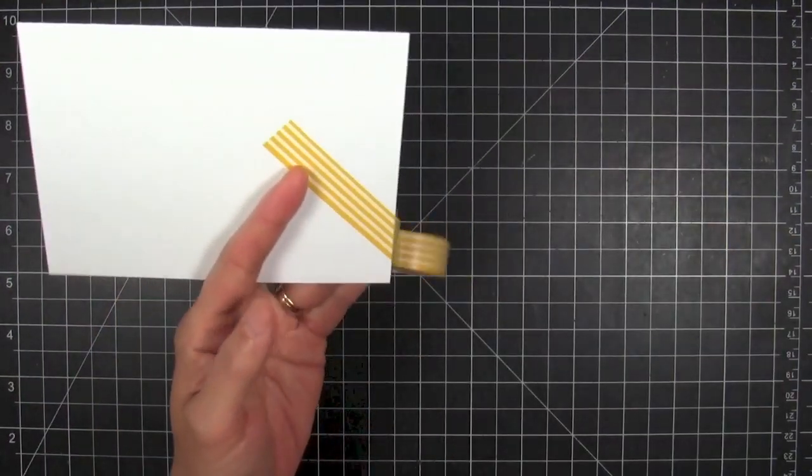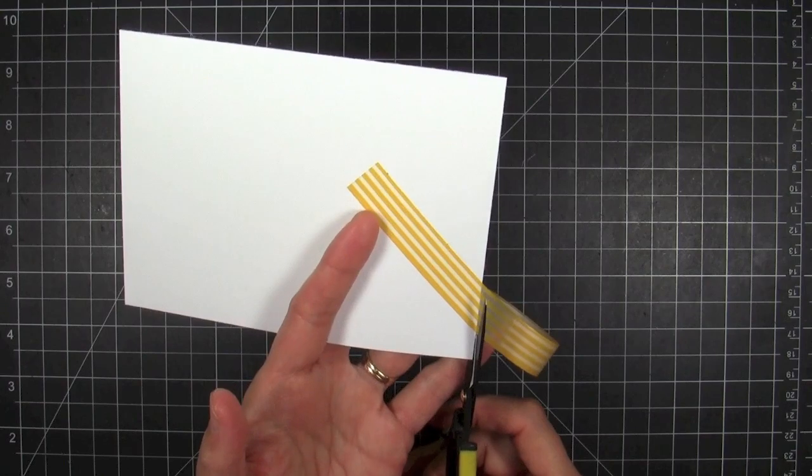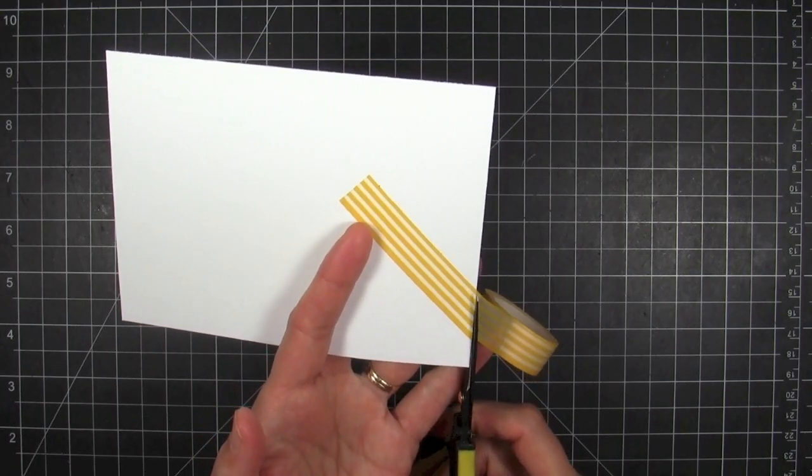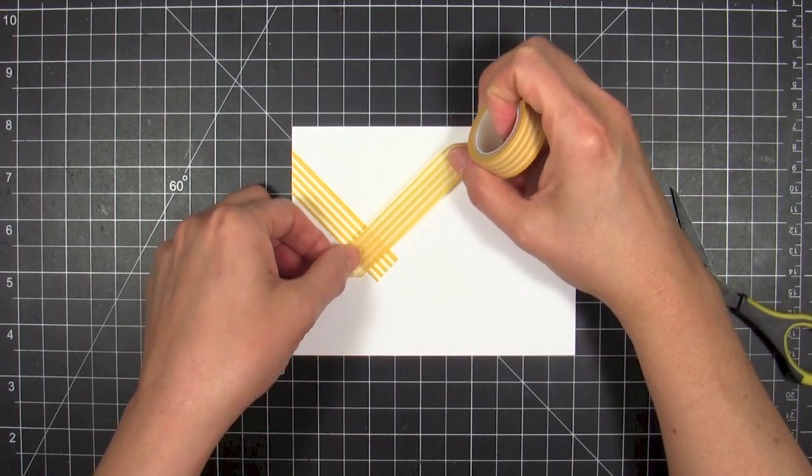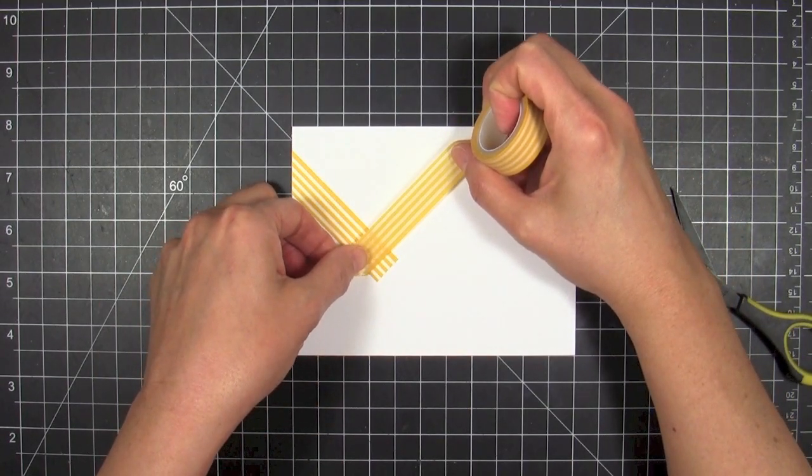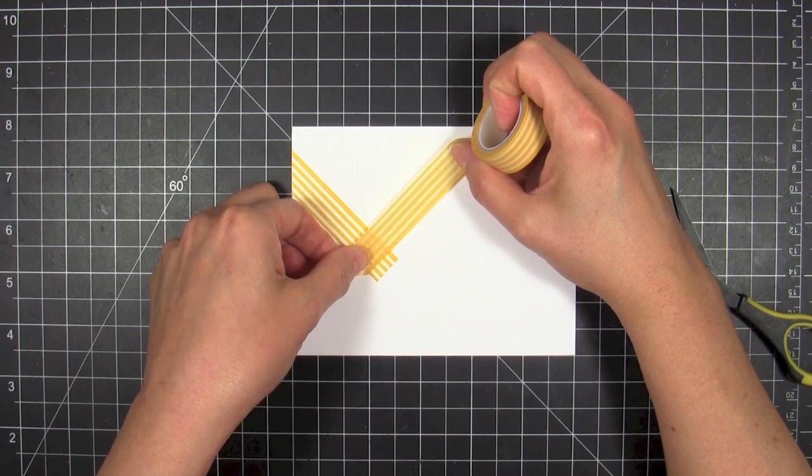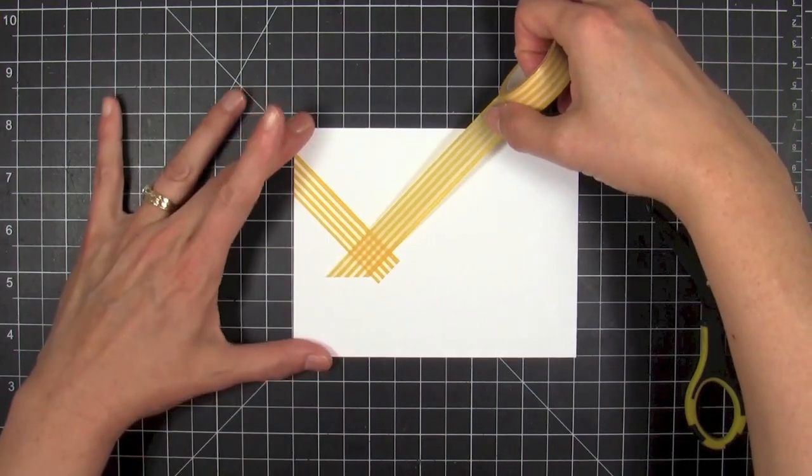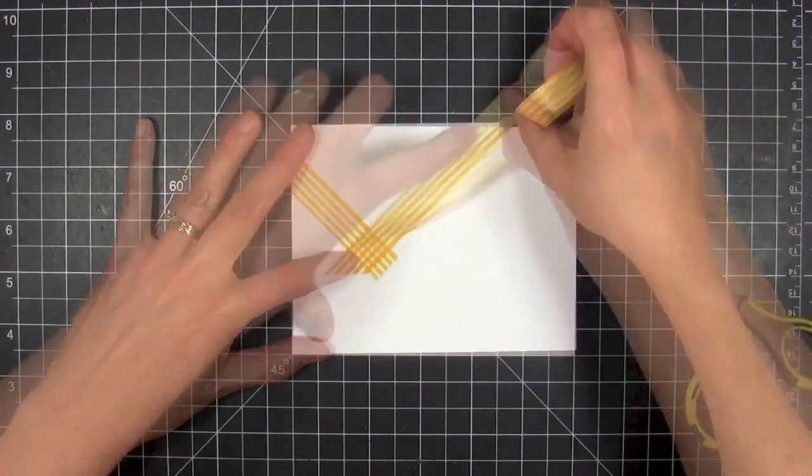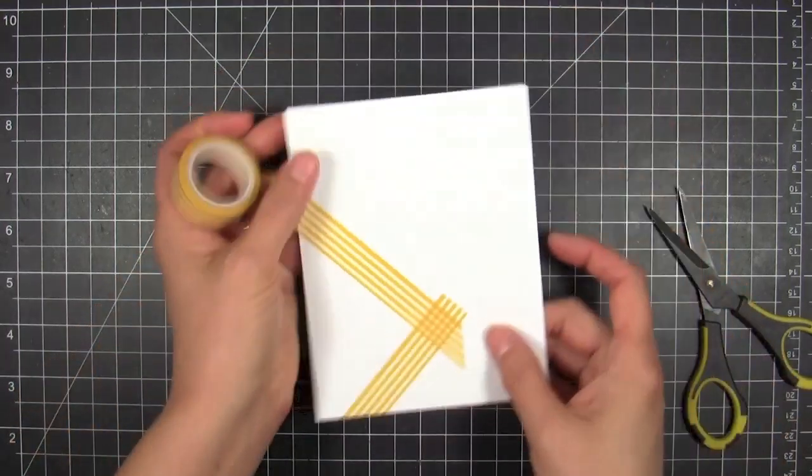So now I can trim off this excess and then I will rotate the paper and do the other side of the chevron. Again, I am using the yellow tape and I want to make sure the end of the tape goes just up to or past that pencil mark, because that's where the two intersect—that lower most intersection point is where the tip of my chevron is going to be.